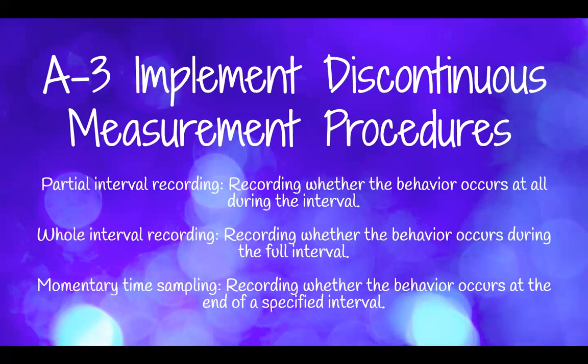Partial interval recording is recording whether the behavior occurs at all during the interval. Using 15-minute intervals with the hitting example — from 8:00 to 8:15, did your learner hit at all? If they did, even once, you would record that interval as occurring. This is kind of the exact opposite of whole interval recording, in which you record whether the behavior occurs during the full interval. With whole interval recording, using the same example, you would only record that interval if your learner was hitting the entire 15 minutes.